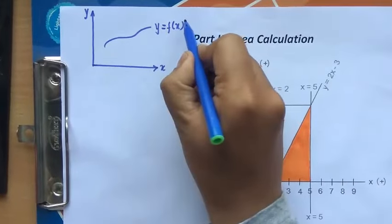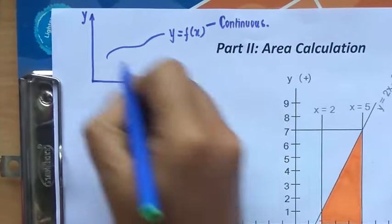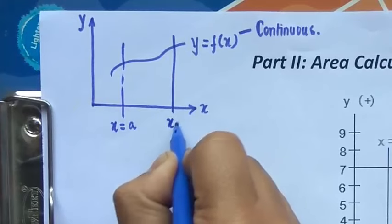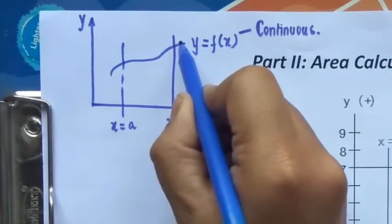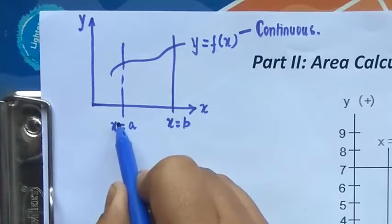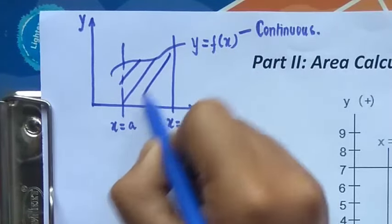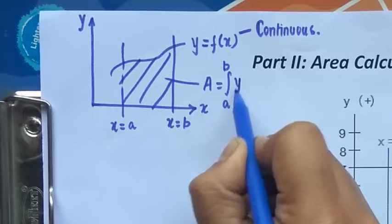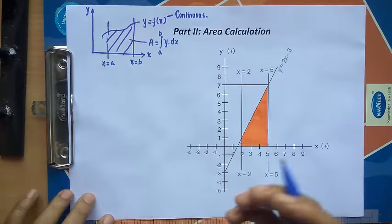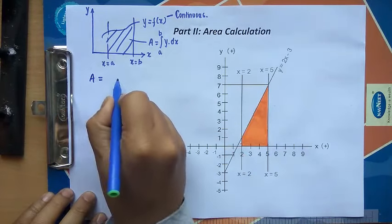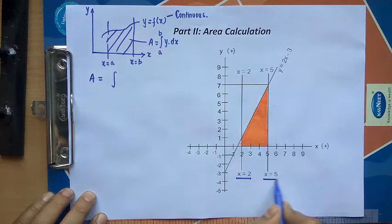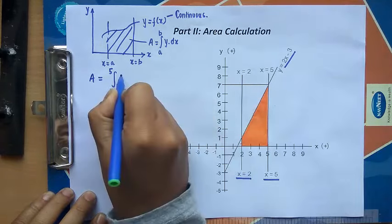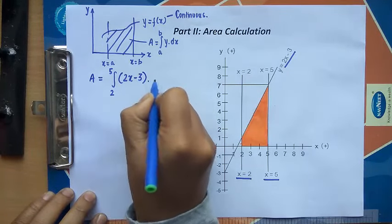For a function y equals f(x) that is continuous from x equals a to x equals b, the area bounded by the curve, the two vertical lines, and the x-axis is given by the formula: integral from a to b of y dx. Using this formula, our integral runs from x equals 2 to x equals 5, and y equals 2x minus 3, so we compute the integral from 2 to 5 of (2x minus 3) dx.